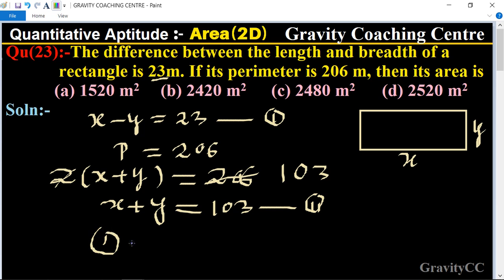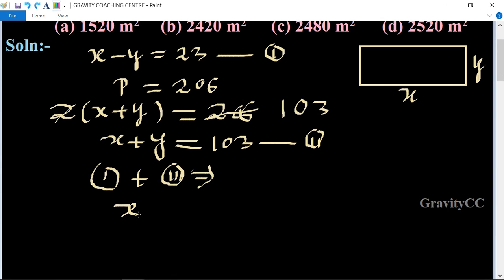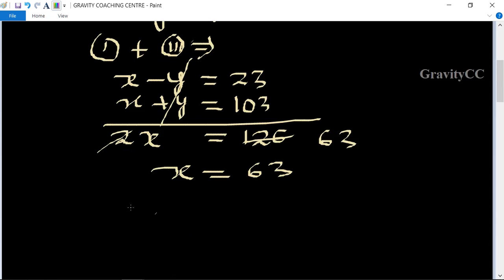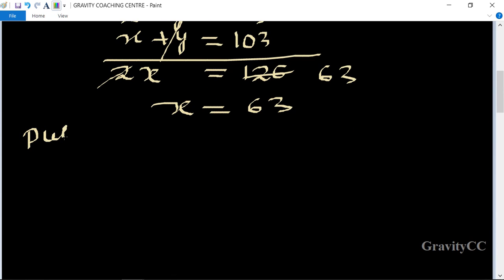Now we're adding first and second equation, so we get x minus y equal to 23 and x plus y equal to 103. So y cancels and 2x equal to 126. Cancel by 2, we get 63, so x equal to 63.